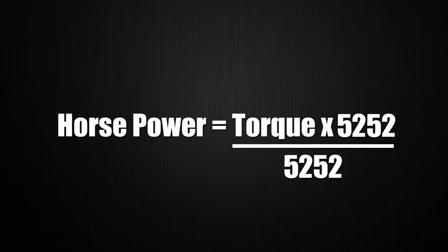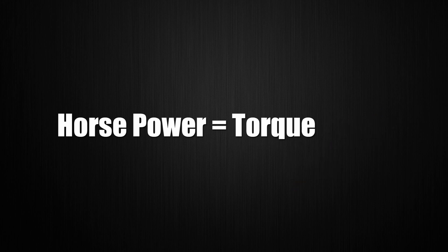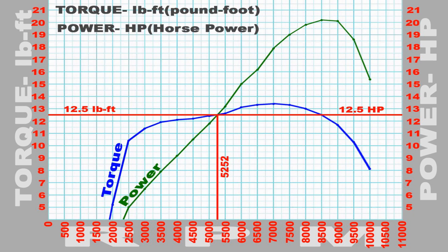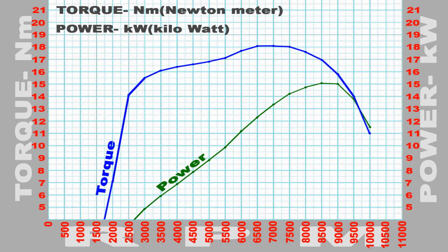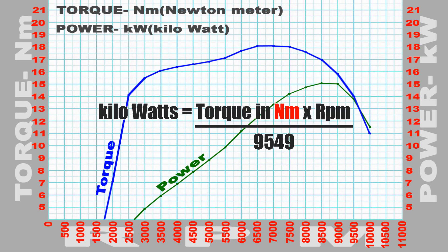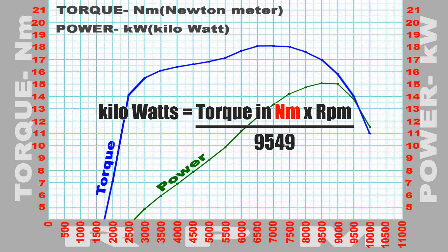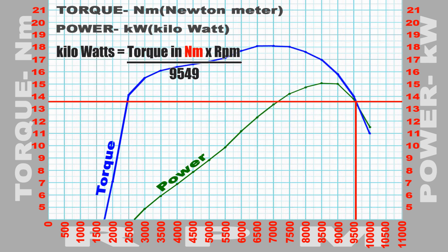That is the HP equation. Now at 75.8 RPM, the units cancel and HP equals torque. The numbers work out to 22 units. In the metric system, KW equals torque in Nm multiplied by RPM, divided by 9549. The power and torque figures cross at 9549 RPM in the metric graph.